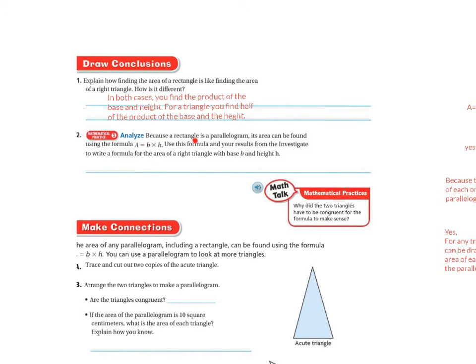Let's analyze. Because a rectangle is a parallelogram, its area can be found using the formula area equals base times height. Use this formula and your results in the investigation to write the formula for the area of a right triangle with a base and height. And I already kind of did this for you.